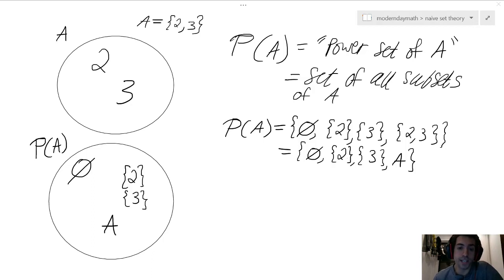Then if we wanted to talk about the subsets, then we would have the empty set that's inherently in every single set. Talk about the single element 2 being contained in a set. The single element 3 being contained in a set. And then A itself, because we know that a set can just contain itself.